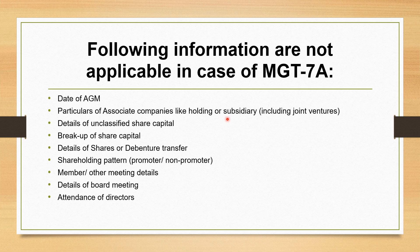There is a slight difference between Form MGT-7A and MGT-7, as MGT-7A is a simplified form where certain details are not required to be filled up. These details include: date of AGM, particulars of associate companies like holding and subsidiary company, details of unclassified share capital, breakup of share capital, details of shares and debenture transfer, shareholding pattern, members and other meeting details, and details of board meeting attendance of directors. These details are not required in Form MGT-7A but are required in Form MGT-7.